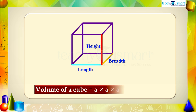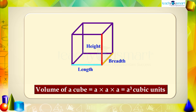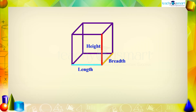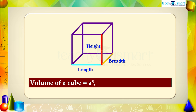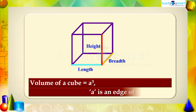...a multiplied by a multiplied by a, which is equal to a³ cubic units. That is, the volume of a cube equals a³, where a is an edge of the cube.